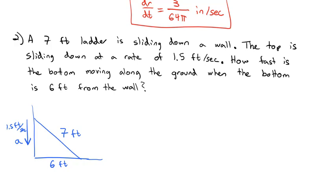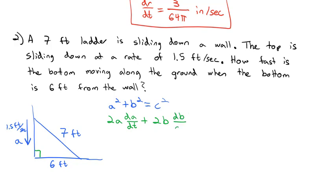The ladder is 7 feet long, and we're interested in the moment when we're 6 feet from the wall. If we call the other side A, the formula for any right triangle is A² + B² = C². Taking the derivative with respect to time: 2A times dA/dt, plus 2B dB/dt, equals 2C dC/dt.